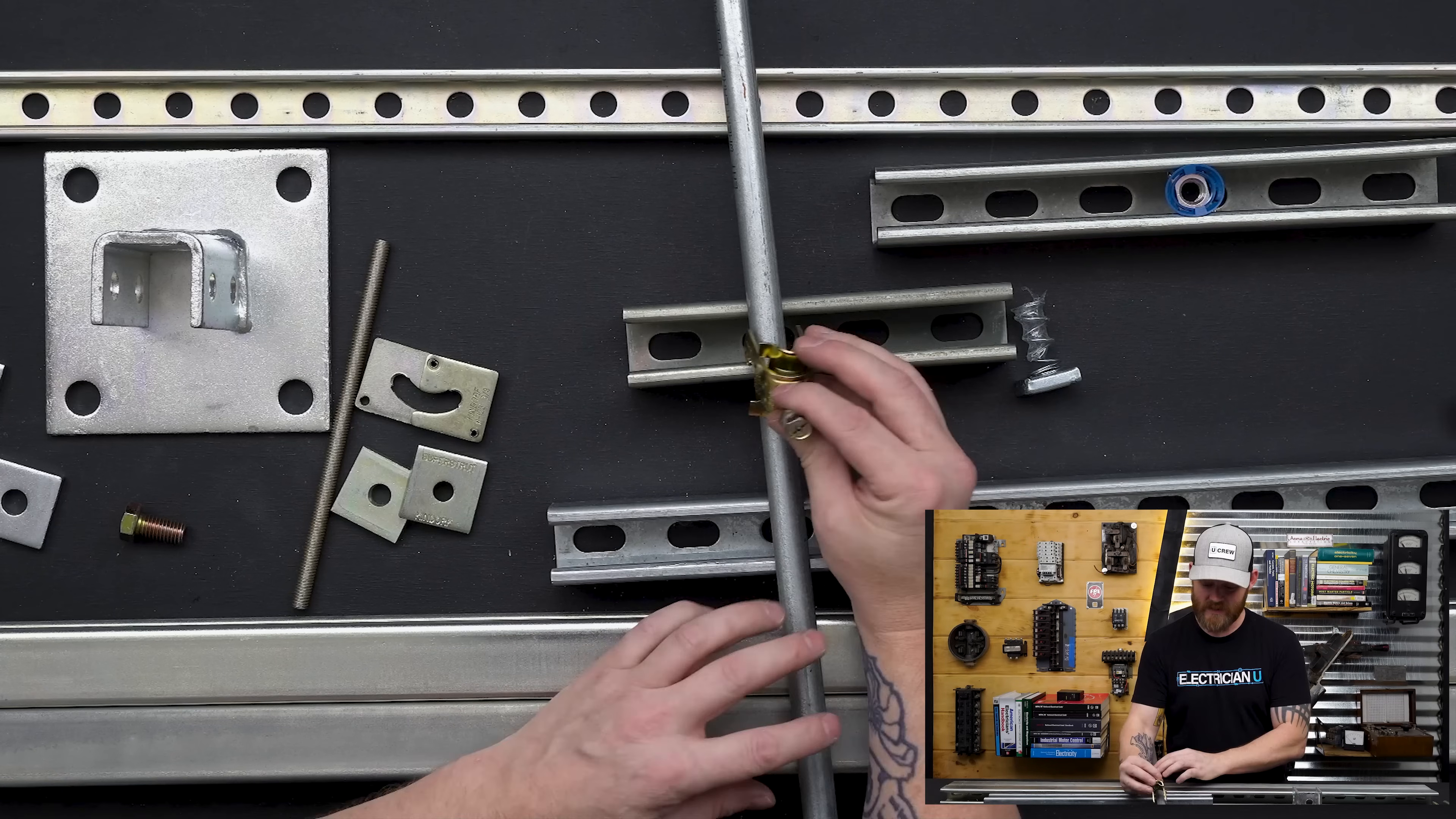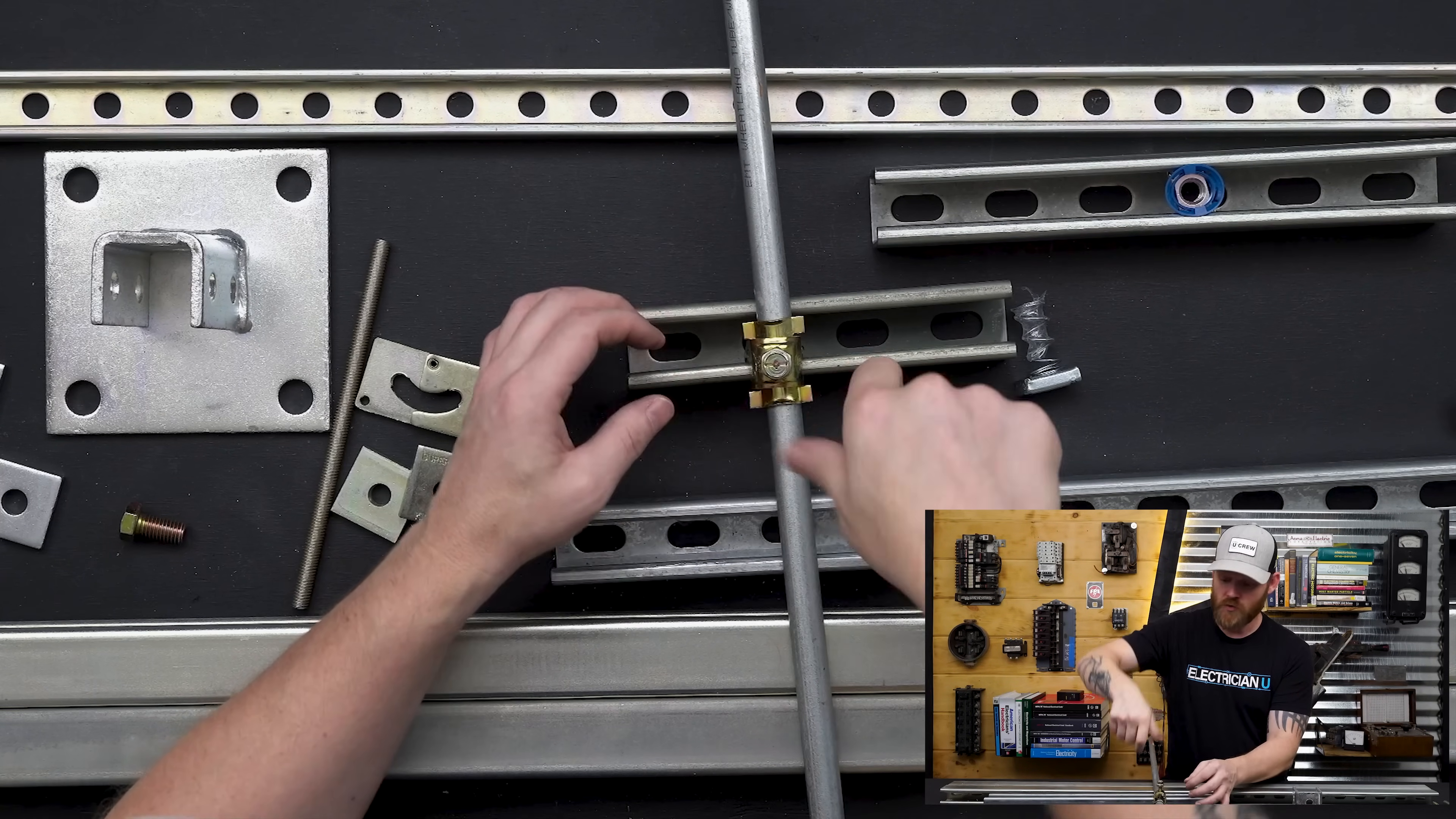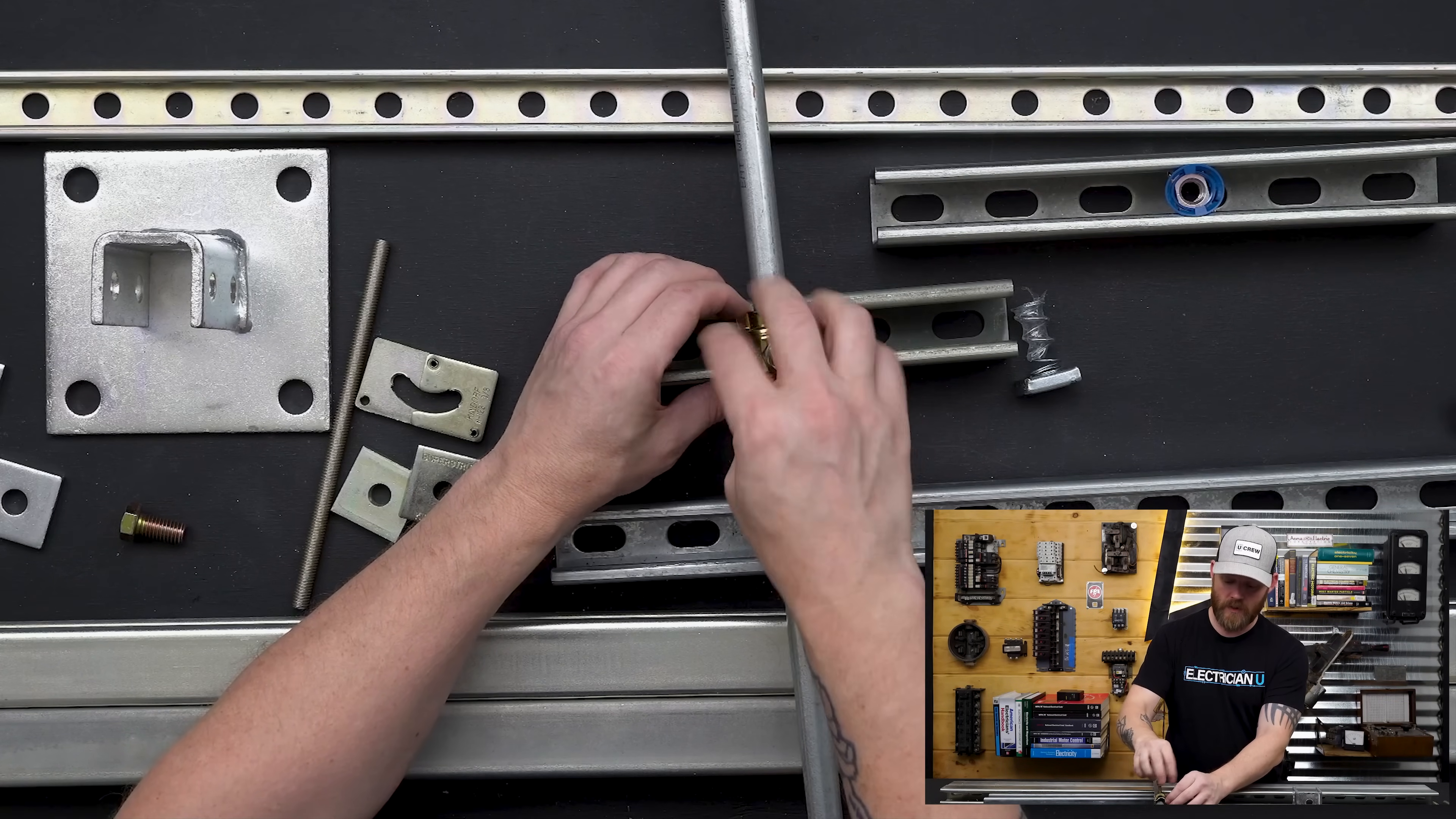Check this thing out. You want to talk about time savings. So this hooks on the side, you can get a seven sixteenths for your drill. That's already on there. That took me no time. Take it off. You just unscrew it, take it off. I love these things.